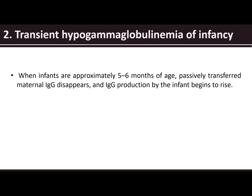Then we also have transient hypogammaglobulinemia of infancy. When infants are approximately five to six months of age, passively transferred maternal IgG disappears, and IgG production by the infants would begin to rise. Remember that when infants are newly born, they have no antibodies.